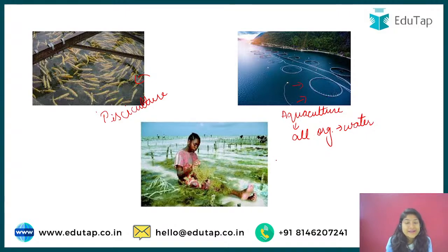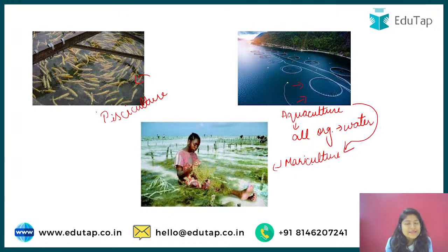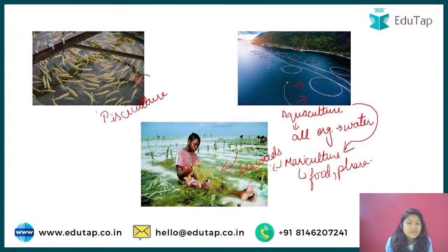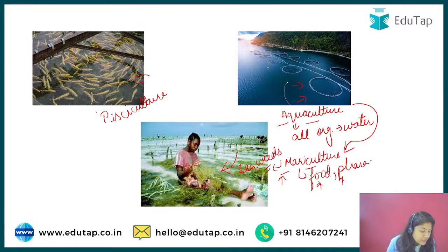In aquaculture we can rear aquatic organisms both in the natural environment as well as in an artificial environment. Then there is mariculture, which is a subset of aquaculture. In mariculture we focus on aquatic organisms that are useful for food, pharmaceuticals, and similar purposes — for example, seaweeds. So in aquaculture we are rearing organisms broadly, while in mariculture, which is a subset, we focus on specific commercially valuable sections.